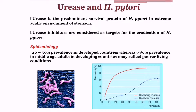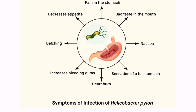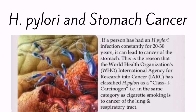Urease inhibitors are the targets to eradicate H. pylori. These are the symptoms of such infections, like stomach pain, bad taste in the mouth, nausea, and loss of appetite.